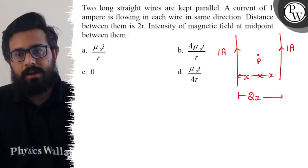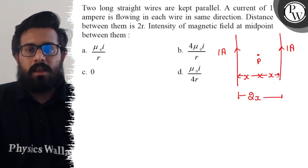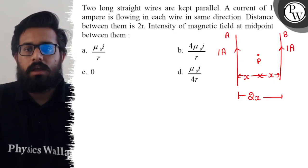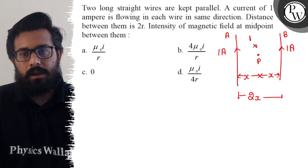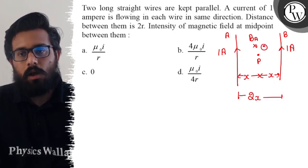We need to find the magnetic induction at midpoint P. Since both currents are in the same direction, wire A's magnetic induction at point P will be inward, and wire B's magnetic induction at point P will be outward.